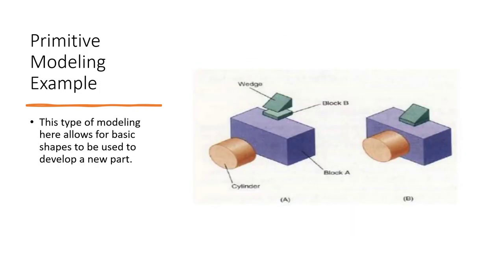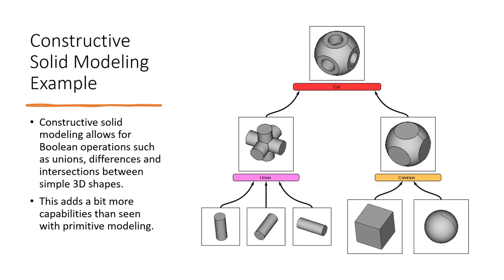Primitive modeling examples: using those simple shapes here, we're going to basically pop them all together and make another shape or object. Getting into constructive solid modeling, this allows for boolean operations such as unions, differences, and intersections between simple 3D shapes. This could allow you to make cuts. Here they're doing a union to make a general shape that they're going to remove from this other part. This adds more capabilities than primitive modeling—that boolean effect is big, being able to add or subtract.